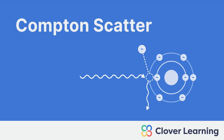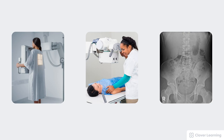Hey everybody, welcome back. This video discusses another type of radiation interaction called Compton scatter. This is the most common but the least desirable photon interaction. It's important to understand Compton scattering because it negatively affects all three areas of concern: patient dose, occupational dose, and image quality.